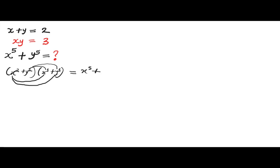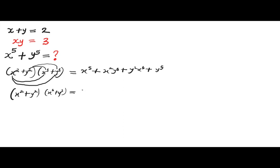plus x² × y³ = x²y³, plus y² × x³ gives x³y², plus y² × y³ = y⁵. So let's rearrange: (x² + y²)(x³ + y³) equals x⁵ + y⁵ plus x²y³ + x³y².